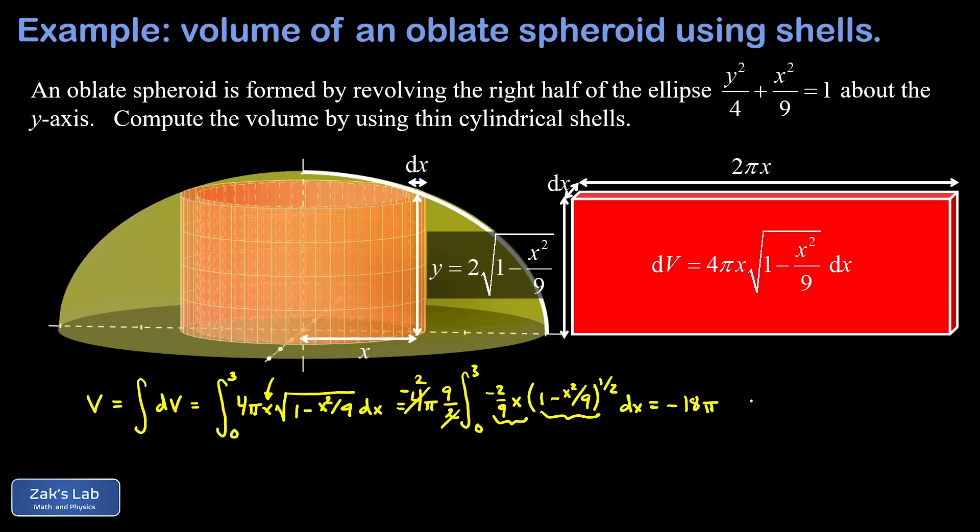We add 1 to the exponent, that gives us 1 minus x squared over 9 to the 3 halves, and then we have to divide by 3 halves, which is the same as multiplying by 2 thirds. This whole thing is going to be evaluated from 0 to 3.